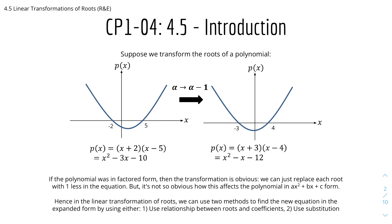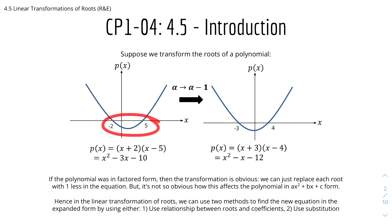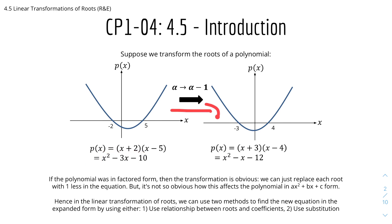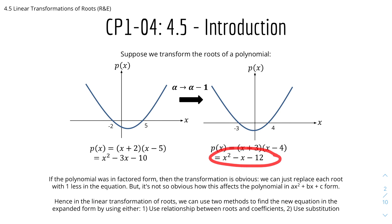Suppose we transform the roots of a polynomial from one graph to another. We can see that the roots go from minus 2 and 5 to minus 3 and 4. The original graph P(x) equals (x + 2)(x - 5), which expands to a certain equation. Once we shift the graph to the left by 1, the new function expands to a new equation. These two equations are actually quite connected because of the rules of polynomials.